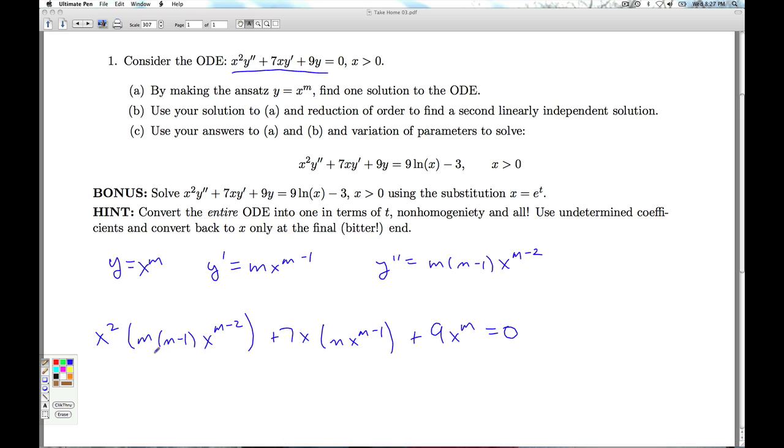And now I look at what happens here. X squared times x to the m minus 2 is going to give me an x to the m. X times x to the m minus 1 is going to give me an x to the m. I'm going to have an x to the m I can factor out. And what's left over? I get an m squared minus m plus 7m plus 9.